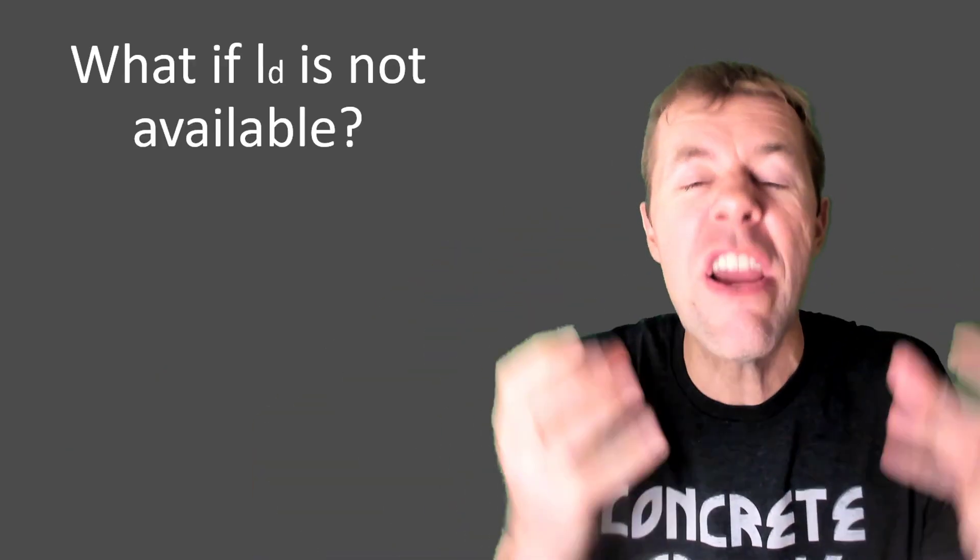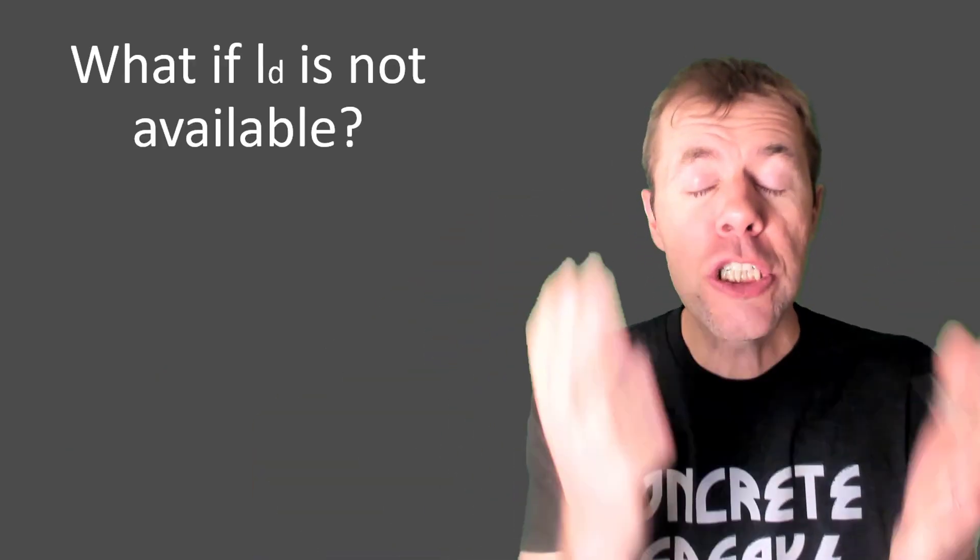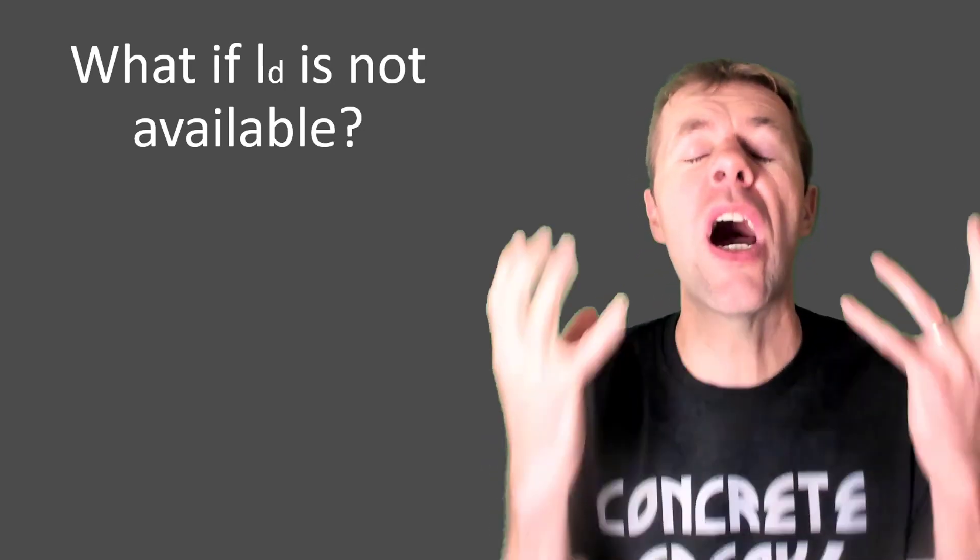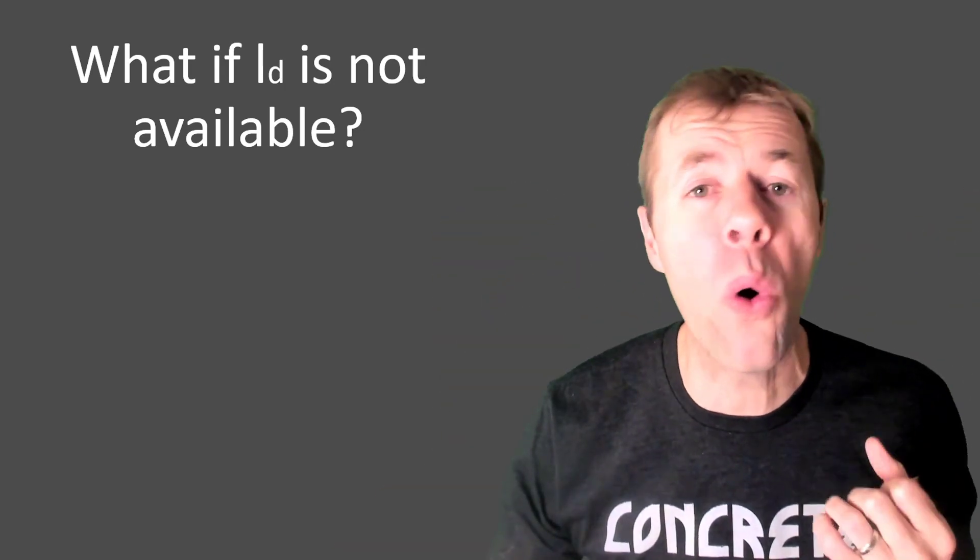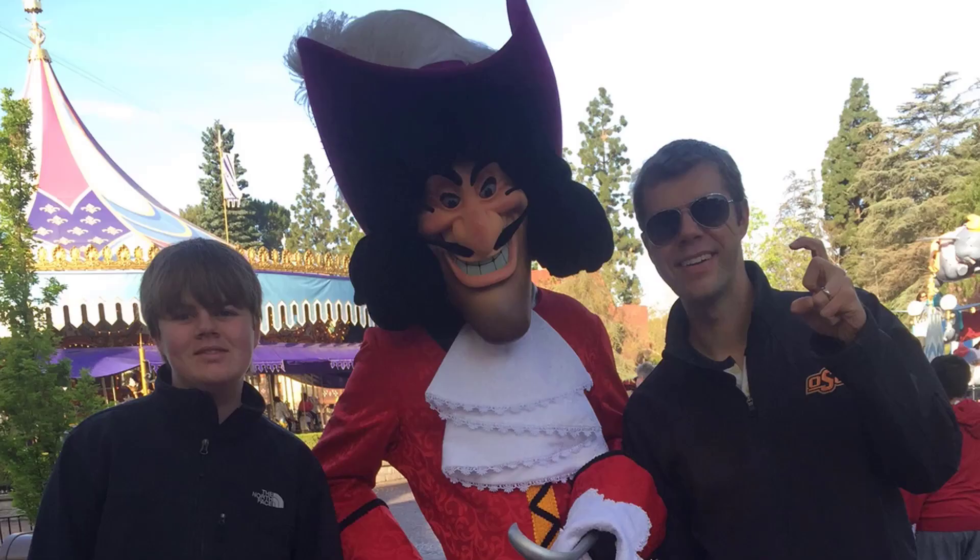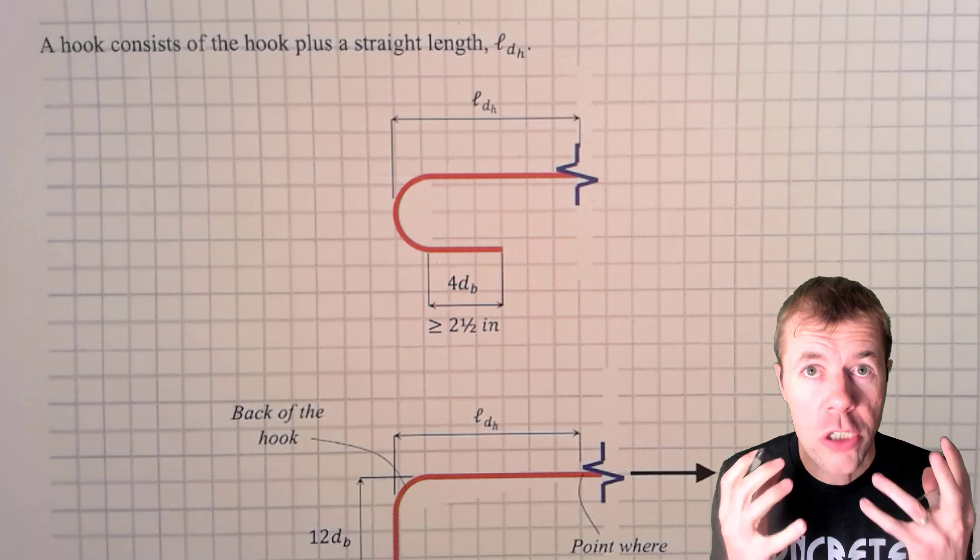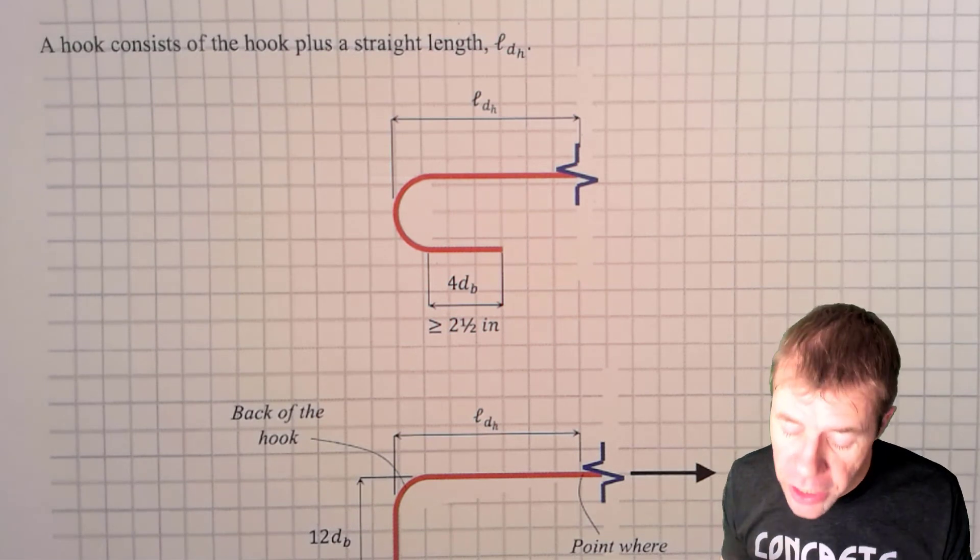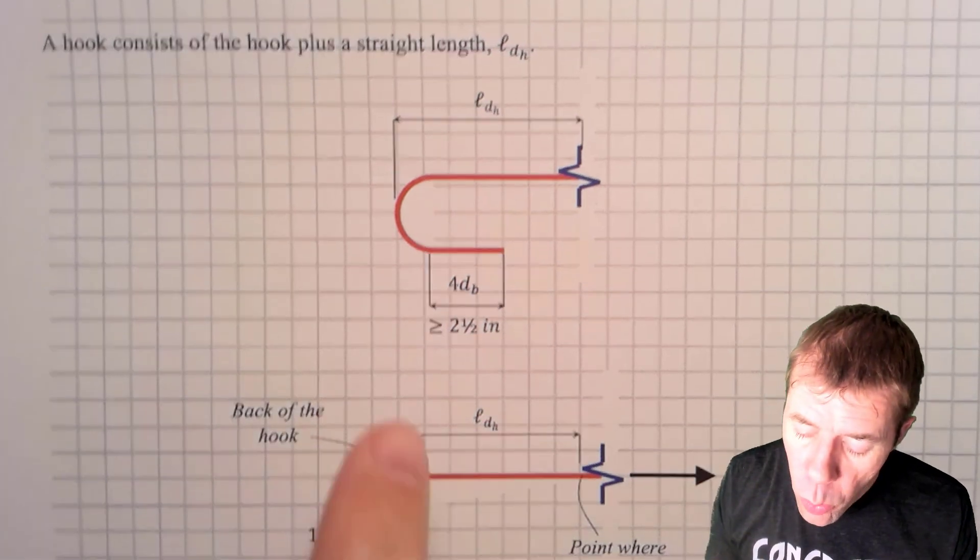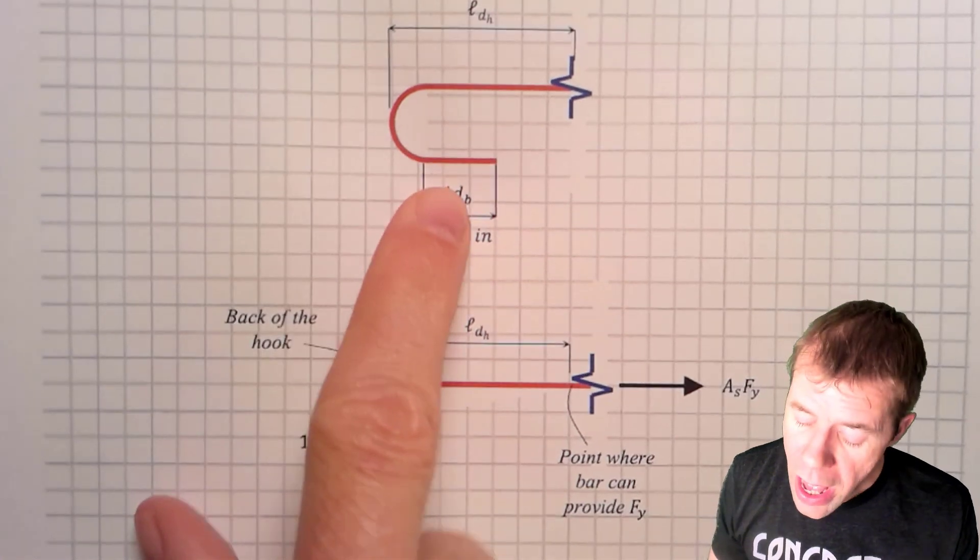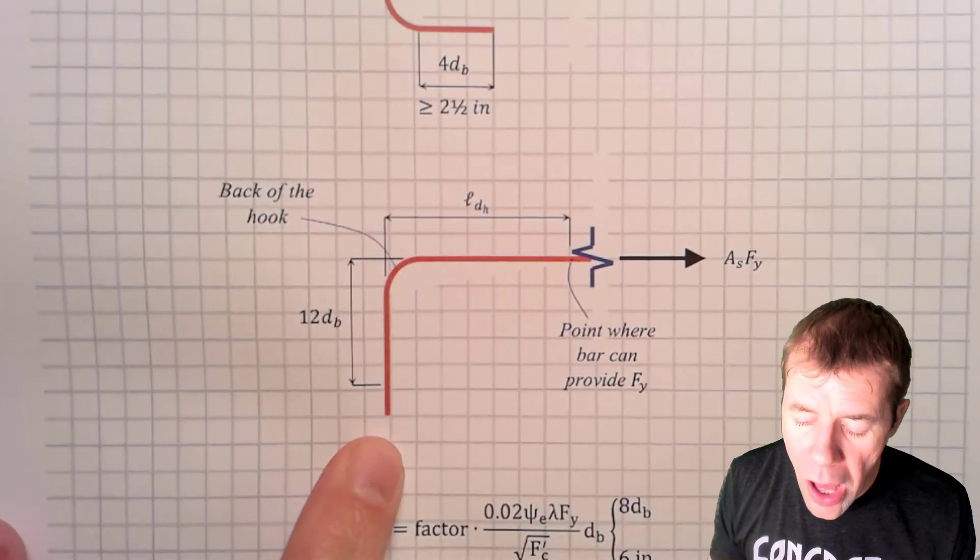Now, what do I do if I don't have enough space for this development length? What do I do? Well, of course, I'd call in Captain Hook. Shiver Timbers. By Captain Hook, I was talking about a hooked bar. There are two different flavors primarily out there. There are the ones that look like candy canes. And then there are the ones that look like L's.